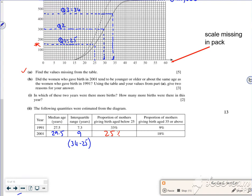So then it says, did the women who gave birth in 2001 tend to be younger or older or about the same age? Right, so if you look, the women in 2001 tended to be older. Their median age is 29.5.